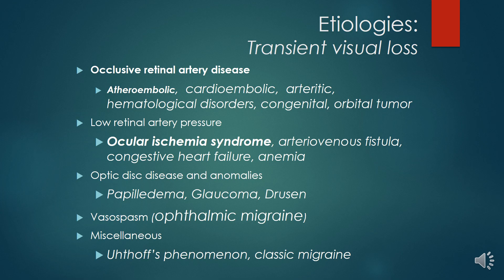Causes of transient visual loss include occlusive retinal artery disease, low retinal artery pressure, optic disease and anomalies, vasospasm, and miscellaneous causes. Occlusive retinal artery disease could be atheroembollic or cardioembolic, with arrhythmias and hematological disorders, congenital causes, or orbital tumor. Low retinal artery pressures include ocular ischemic syndrome, arteriovenous fistula, congestive heart failure, and anemia. Optic disease anomalies include papilledema, glaucoma, and optic disc disease. Vasospasm includes ophthalmic migraine; miscellaneous causes include Uhthoff phenomena and classical migraine.